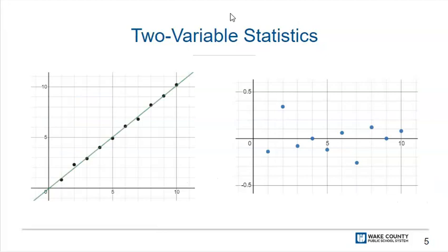With two variable statistics, you will create scatter plots to represent a data set. After creating a scatter plot, you will use technology to create a regression model to fit a function to the data and then use the model to answer questions and solve problems.